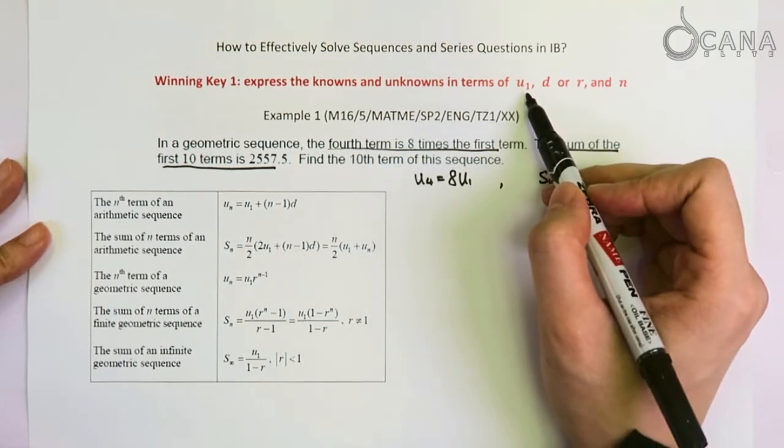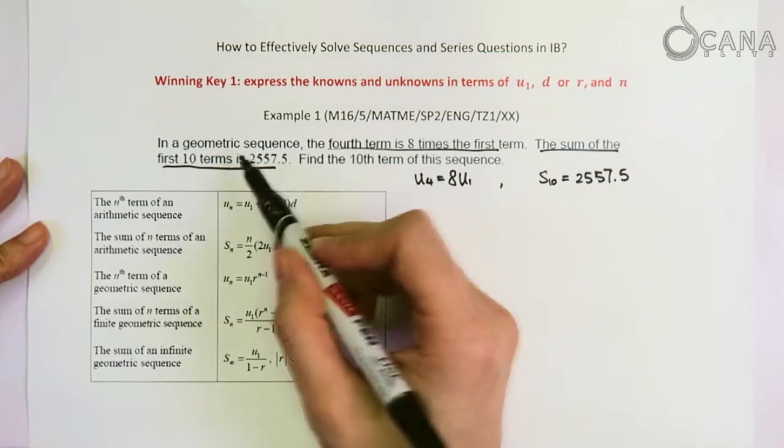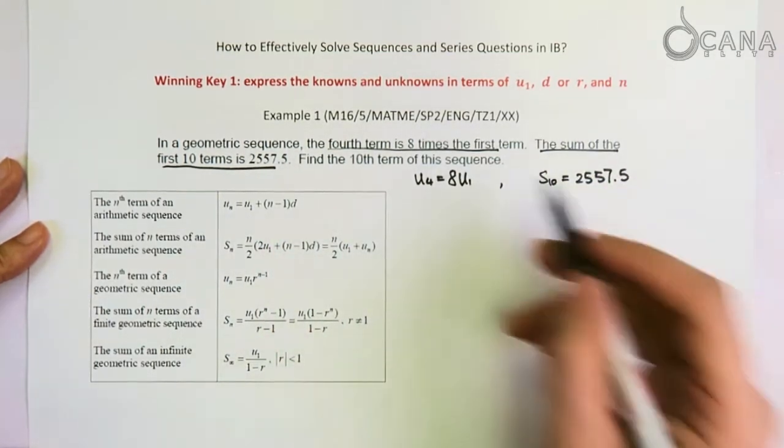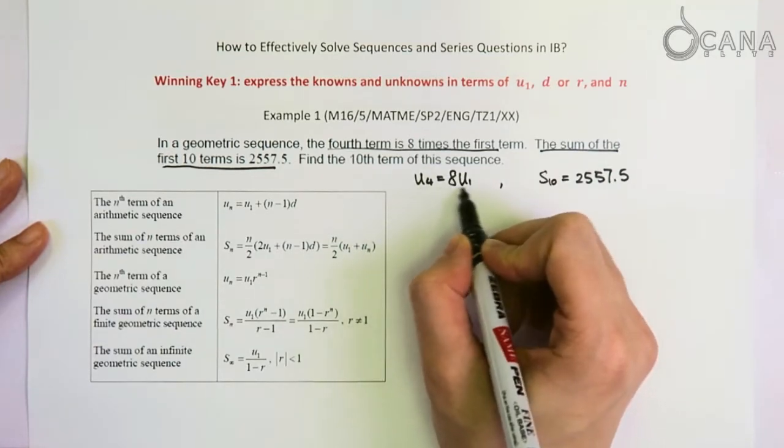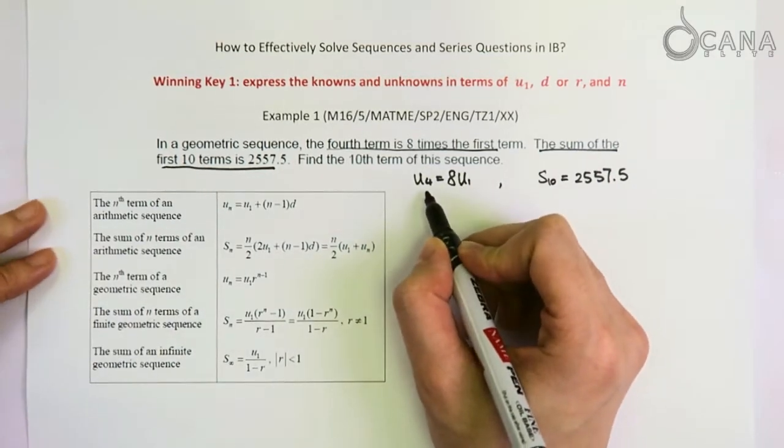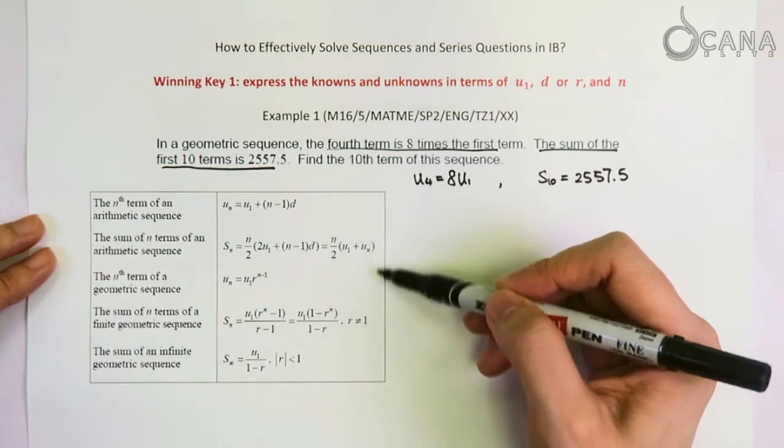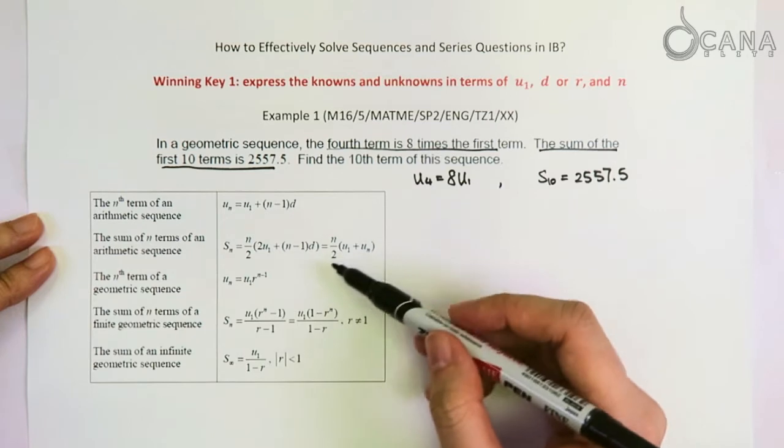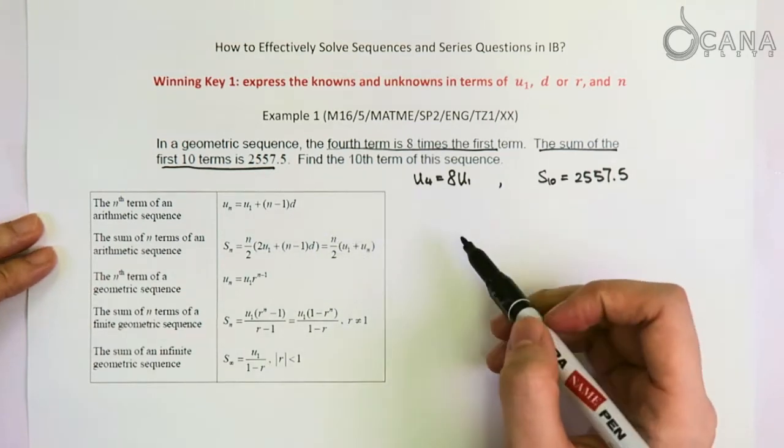In terms of U1 and then R, because this is a geometric sequence question, and also N. Let's look at the first equation. These are the formulas that you need to know, and they're also given in the formula booklet, these formulas that you can use directly.